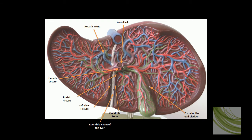The blood supply to the liver is interesting because 75% of the blood reaching the liver is actually venous blood from the small intestine, stomach, pancreas, and spleen. This is the portal vein which lies in an indentation called the portal fissure. We also have a fossa for the gallbladder, which is another indentation.